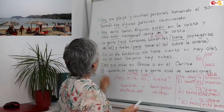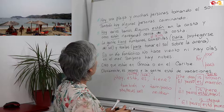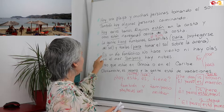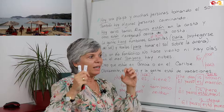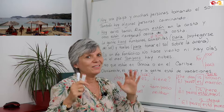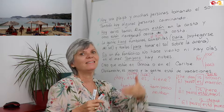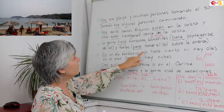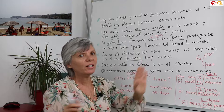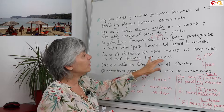Es un día fantástico — it's a fantastic day. No hace viento ni hay olas en el mar — it's not windy and there are no waves in the sea. Tampoco hay nubes — neither are there clouds. For physical descriptions like es un día fantástico or es una casa grande, we use the verb ser. Also, remember: también versus tampoco.